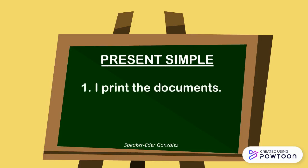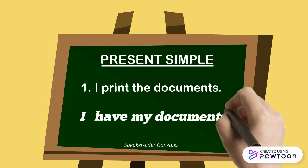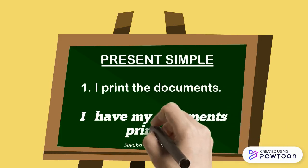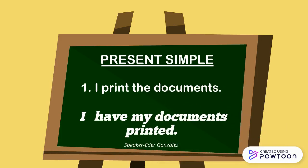The causative sentence must be kept in the same time. We place the subject at the beginning of the sentence, then the verb 'have' is placed in the time of the original sentence, then we place 'my document' as the object of the sentence, and finally the main verb is placed in past participle.